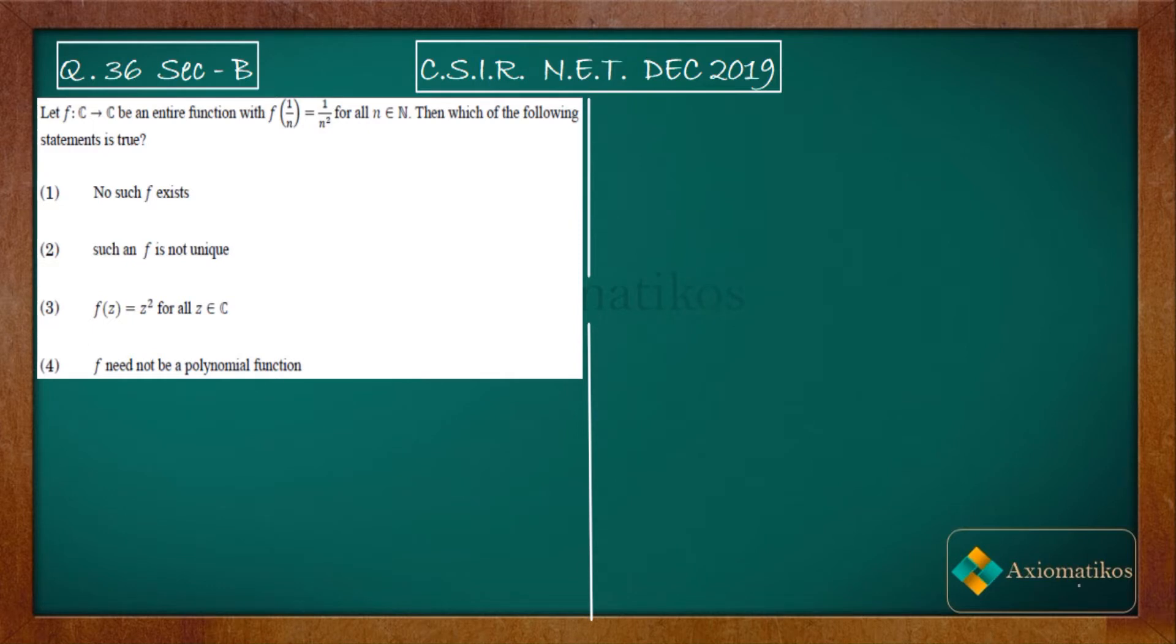Hello dear students, welcome to Axiomatics course. This video is part of the solution series for CSIR NET December 2019, and we are doing problem 36 of your paper. It's a problem from complex analysis, so let us have a look. Let f: C to C be an entire function with the property like this.